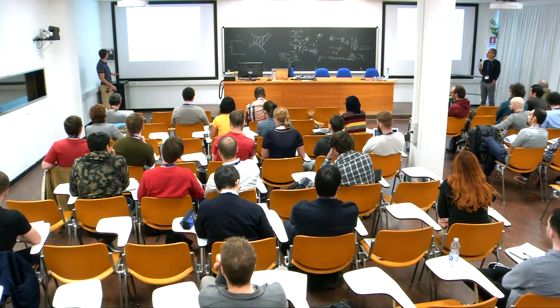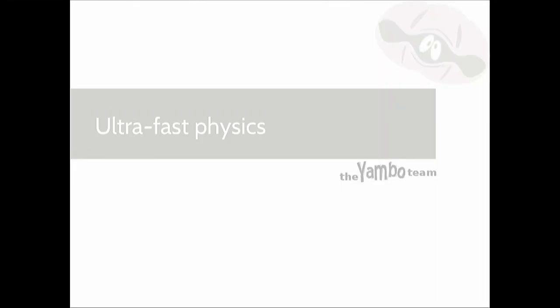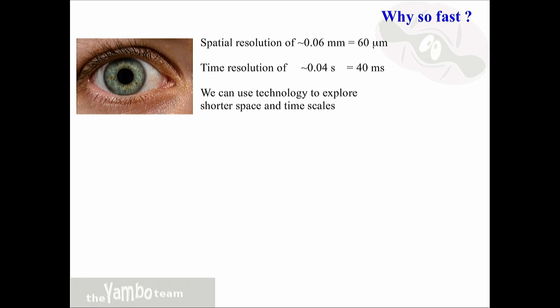The second part is about ultrafast physics—just to give a feeling of how this could in principle be extended to the description of pump-and-probe experiments. This is not in the tutorials; it is something still being developed and not yet in the GPL distribution, but it is in the Yambo code. When speaking about pump-and-probe experiments I always start with this pictorial view of the human eye, which is the instrument we mostly use to explore the space around us, very powerful but with limitations on both spatial and time resolution.